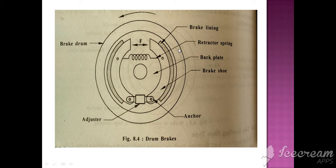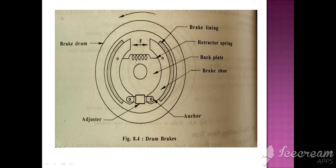As you can see here, this is a typical drum brake and here you can see the brake lining — these are the friction materials, the shaded ones. These are the anchors. This is the retractor spring. This is called the brake shoe. On the brake shoe, this liner is riveted. This is the brake drum. This brake shoe is pressing against the brake drum in a rotary manner.